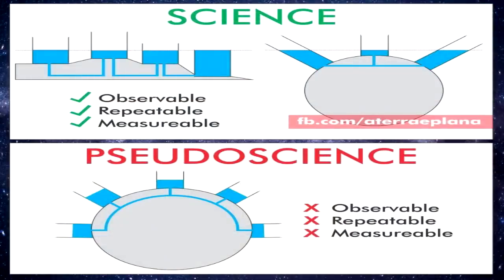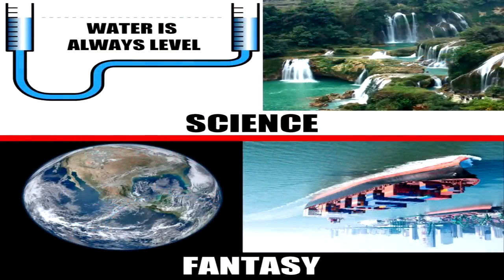We begin with practical proofs, but on the other hand, our opponents begin by first assuming the Earth is a globe, and then looking about for some phenomena to support that assumption. This is not scientific. Yet it is the way of our best astronomers. They first assume, and then try to support their assumptions.